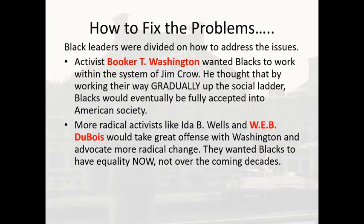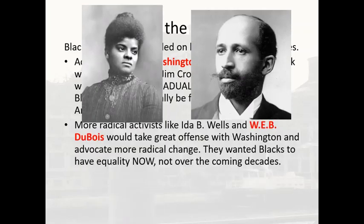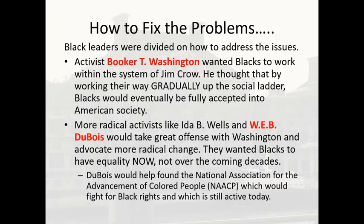However, more radical activists like Ida B. Wells and W.E.B. Du Bois took great offense with Washington's approach and advocated for more radical change — they wanted blacks to have equality now, not over the coming decades. They cited how long it took to get rid of slavery and questioned whether whites would willingly give up their power. Du Bois was the first black man to earn a doctorate from Harvard and wrote the famous book 'The Souls of Black Folk.' Du Bois helped found the National Association for the Advancement of Colored People — the NAACP — which fought for black rights and is still active today. A very important Supreme Court case, Brown v. Board of Education, would be initiated by the NAACP, which we'll discuss in our civil rights unit.